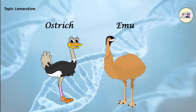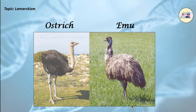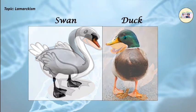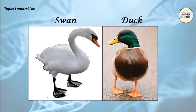Ostrich and emu wings of birds like ostrich and emu have become weak due to no use. Similarly, legs of birds like swan and duck have become useful for swimming due to living in water.